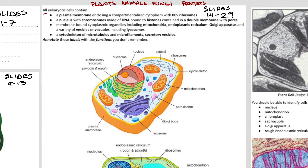All eukaryotic cells contain these structures right here — you need to know these structures as well as their functions. All eukaryotic cells are surrounded by a plasma membrane made of lipids, and that encloses all of this cytoplasm, sometimes referred to as the cytosol — the liquid that everything floats in and where a lot of reactions happen.